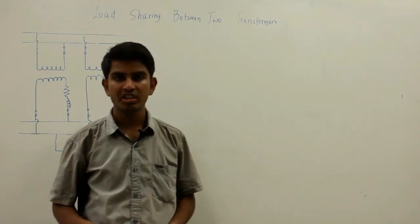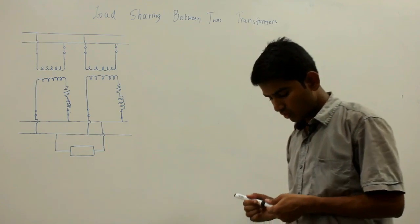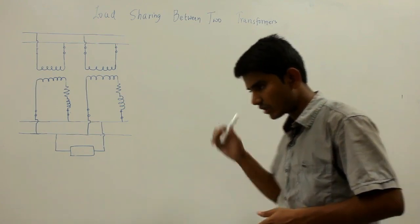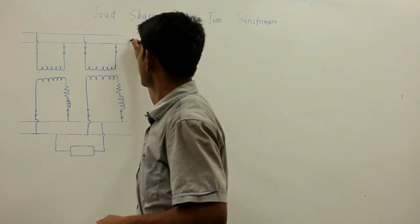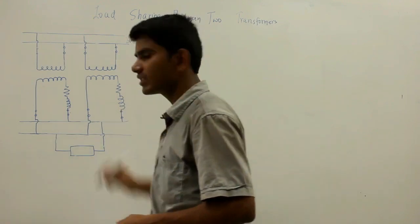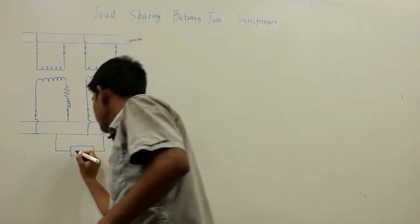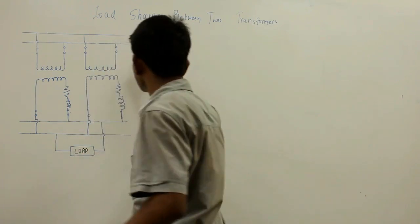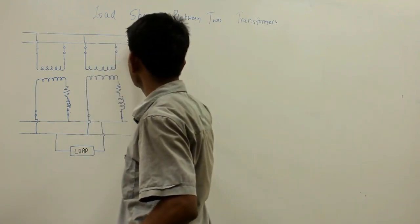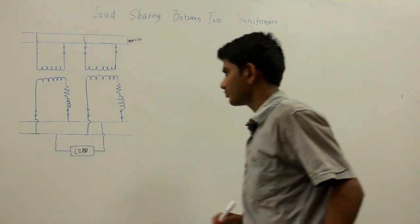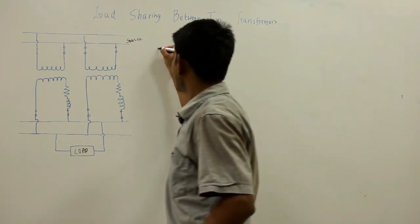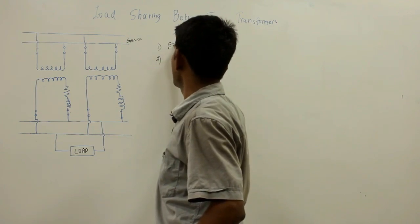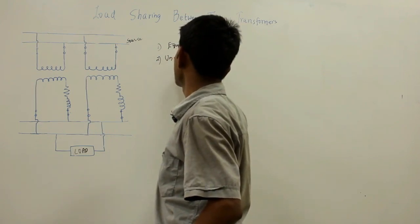In this video, let us discuss the load sharing between two transformers operating in parallel. The definition of parallel operation is: the primaries of the transformers are connected to the same source bus, whereas the secondaries of the two transformers are connected to the same load. When these two conditions are met, the two transformers are operating in parallel. The load sharing between two transformers can be discussed from two conditions: equal voltage ratio and unequal voltage ratio.